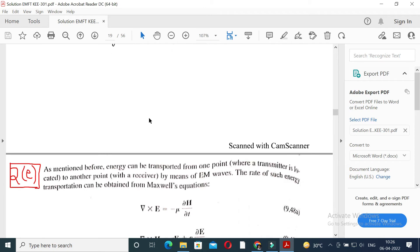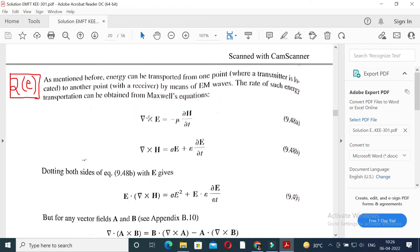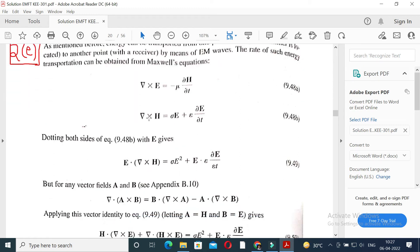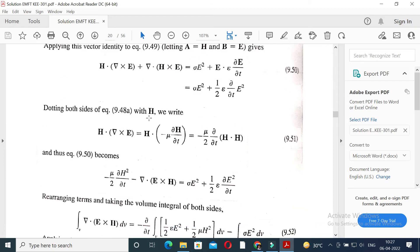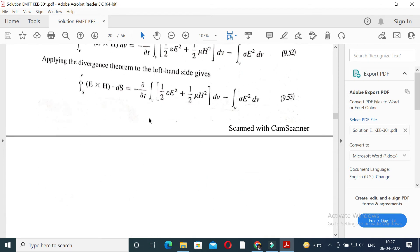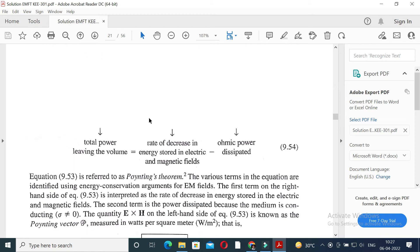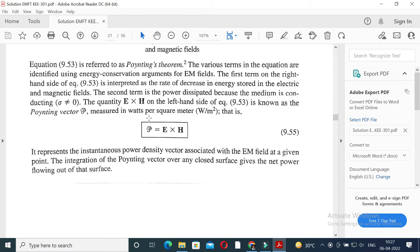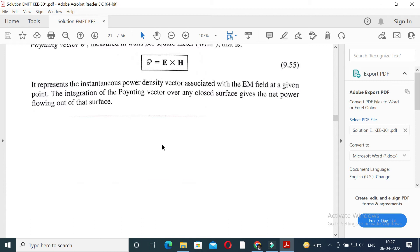Solution of question number 2e: derive the pointing vector using Maxwell equations. It is very easy, we can derive the pointing vector. Earlier in two marks we have seen P is equal to E cross H.